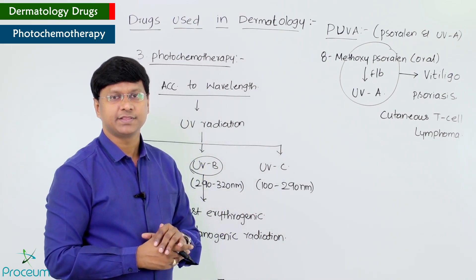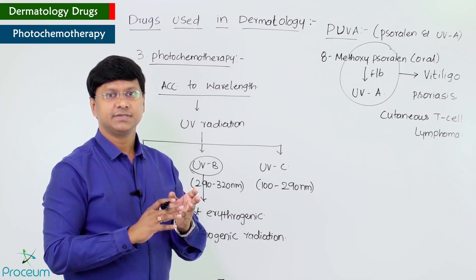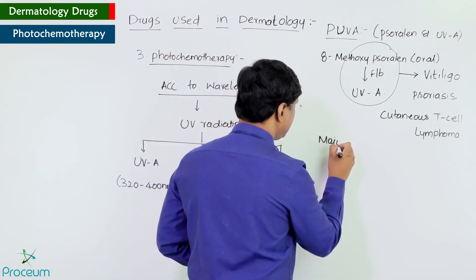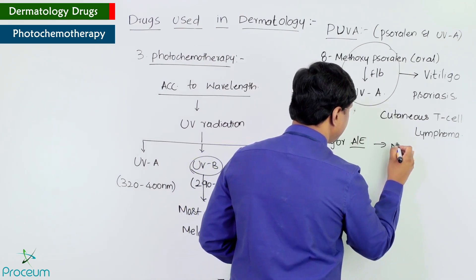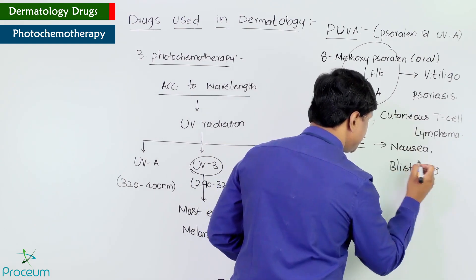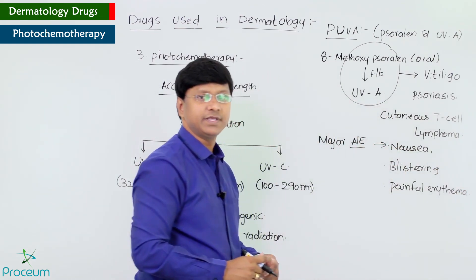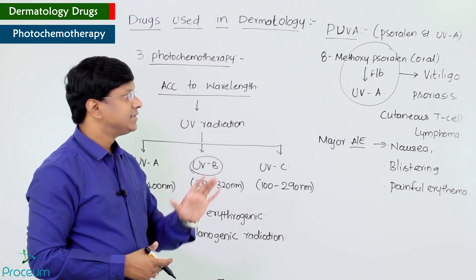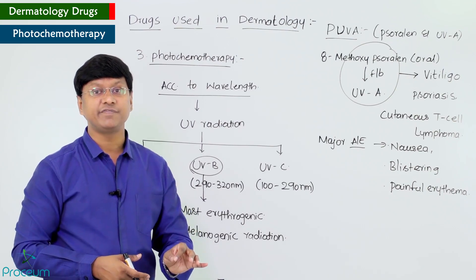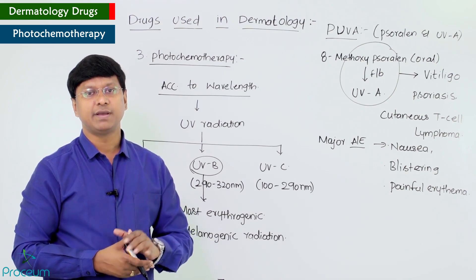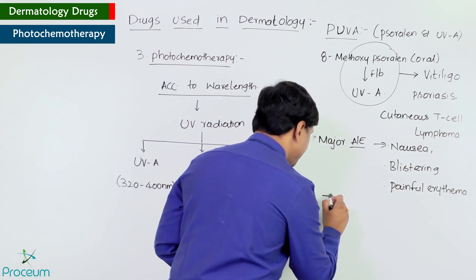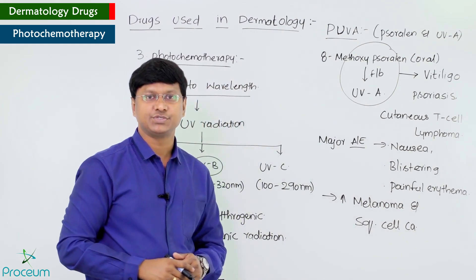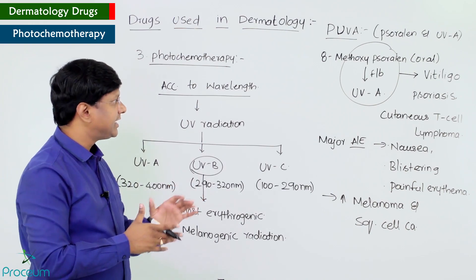The adverse effects of PUVA therapy include nausea, blistering of the skin, and painful erythema — that is, painful reddening of the skin. Additionally, PUVA therapy increases the risk of melanoma and also increases the risk of squamous cell carcinoma.